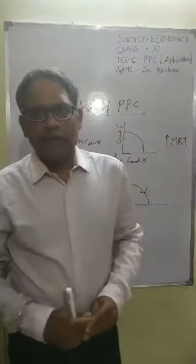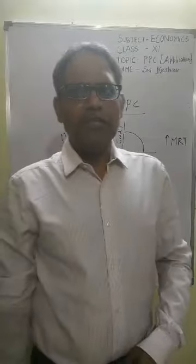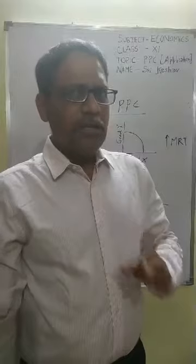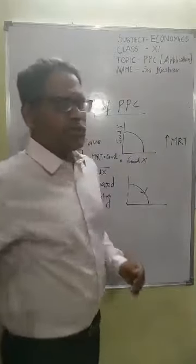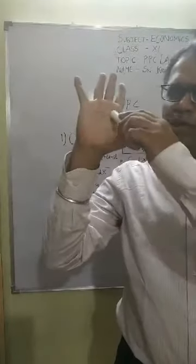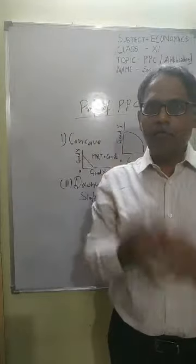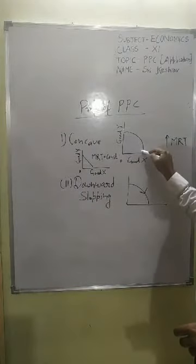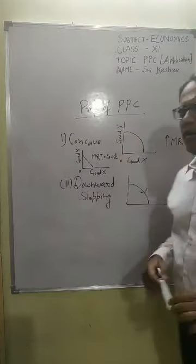Dear students, there are two most important properties of PPC. The first property is: PPC is concave to origin. Observe this shape carefully — it is concave to origin. To remember this, think of a cave shape: this line curves inward, forming a concave shape. In real life you can connect this to the concave and convex mirrors studied in class 9 and 10.